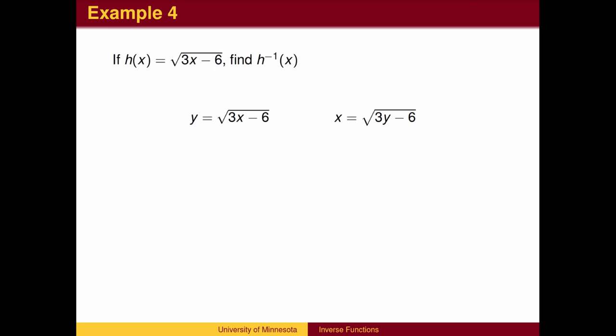Interchange the roles of X and Y and undo the operations to solve for Y. First squaring, then adding 6, and finally dividing by 3. The inverse function H inverse of X is X squared plus 6 over 3.